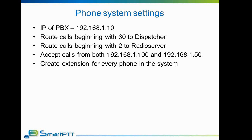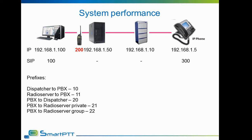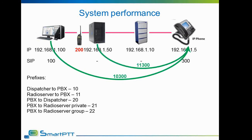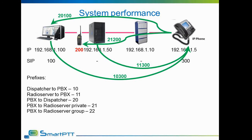A system configured this way will function as follows: to call the phone from the dispatcher, the dispatcher must enter number 10-300. A radio subscriber must call 11-300. A phone user calling the dispatcher uses number 30-100. When calling an individual radio subscriber — for example, number 200 — the phone user must call 21-200. To call group 5, for example, the phone user must call 22-5.